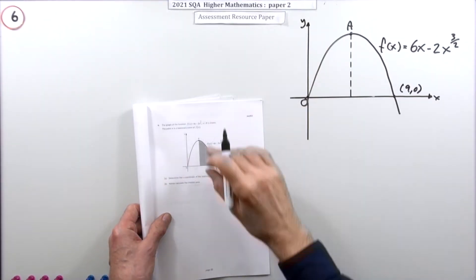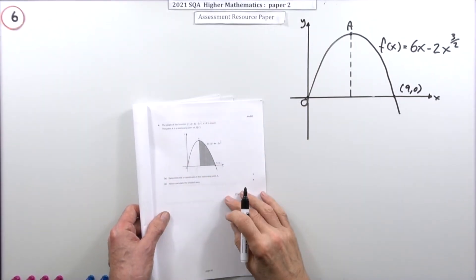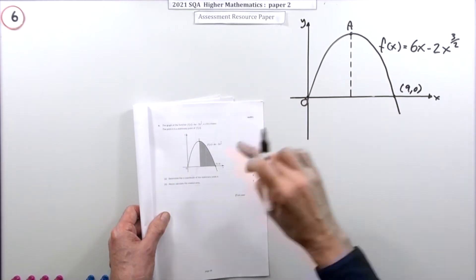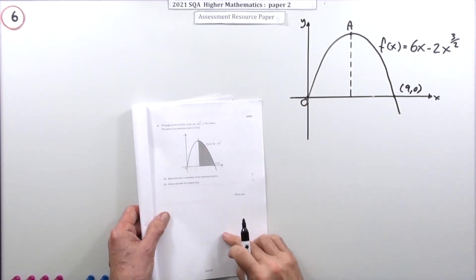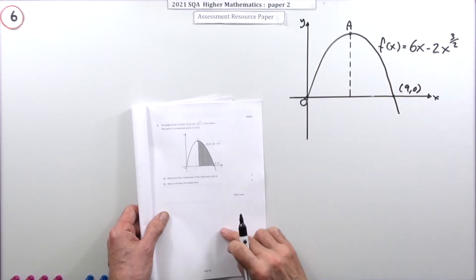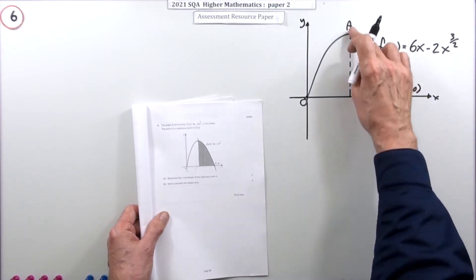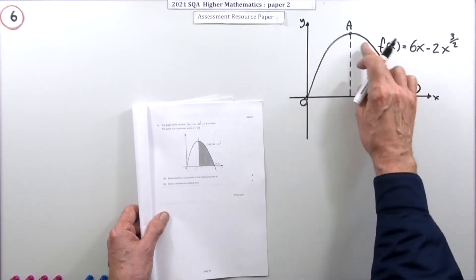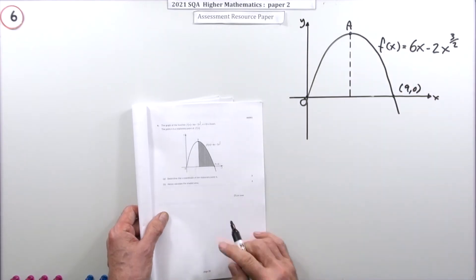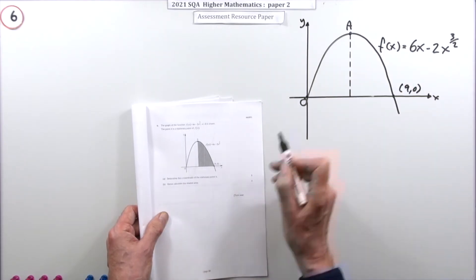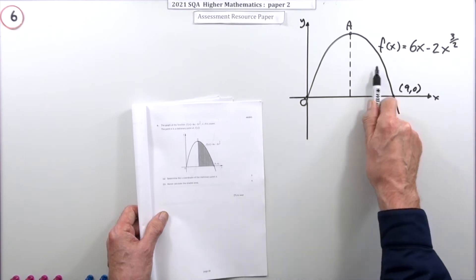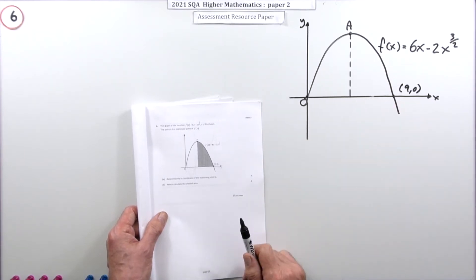Question 6 from Paper 2 of the 2021 Higher Maths Resource Paper — area under a curve. There are two parts to it. The second part is the area under a curve, specifically the area between that dotted line and the end where A is the stationary point. Part A is to find the stationary point, because that's where you'll start working out this area.